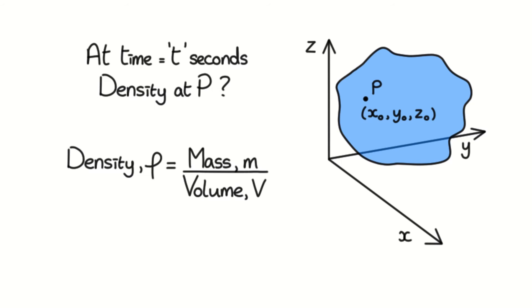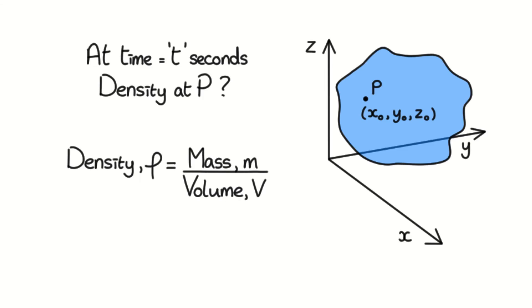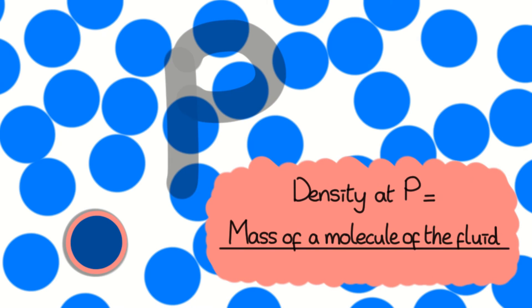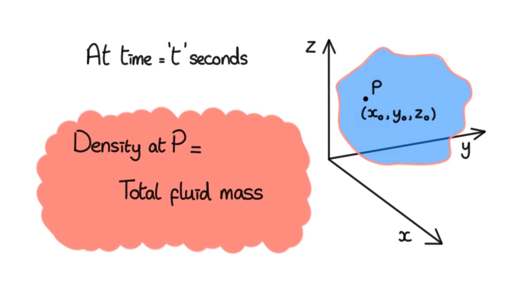Well, density is mass per unit volume, but what mass and volumes do we use? Do we go super small and say that it is the mass of a molecule divided by the volume of a molecule? What if there isn't a molecule at point P, at time t seconds? Do we go big and say that it is the mass of all the fluid divided by the total fluid volume? Surely that's inaccurate.